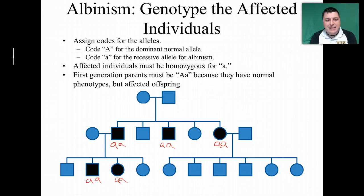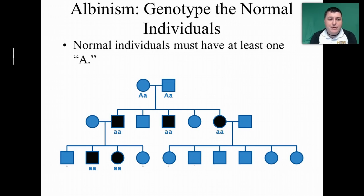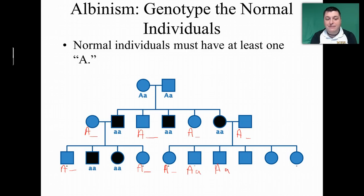What that tells us is that in order for two normally pigmented people to have an albino child, they both must have the albino gene in their genotype — they must be heterozygous. They're not affected by albinism, but they're able to pass it down to the next generation. Anyone else in the pedigree who appears normal must have at least one dominant allele, and we can fill them in with that dominant allele and then try to figure out what the second allele is, depending on their parentage.